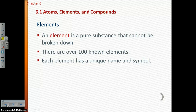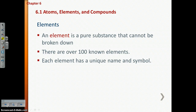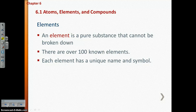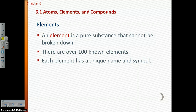An atom is what makes up an element. You've probably heard of the periodic table of elements before — you probably spent a lot of time in eighth grade learning about the different elements. An element is a pure substance that cannot be broken down. There are over 100 known elements, and I think about 91 or 92 occur naturally.